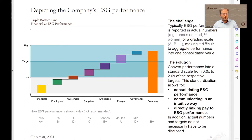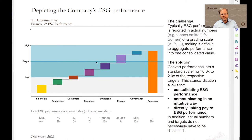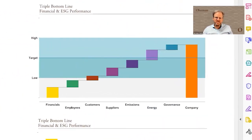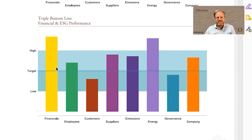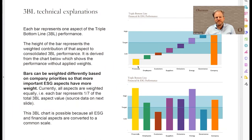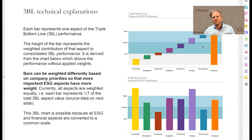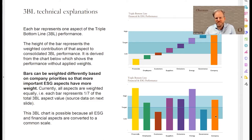We're converting everything to a performance from zero to top performance, where the middle line is your target. This is the technical background: what you see up here are the results of the individual performances for each category, weighted by the weight they have for overall performance. Here it's equally weighted, but we could easily say that financials get a higher weight, making that bar higher at the cost of other bars which then have a lower weight. So what you see here is a weighted result.